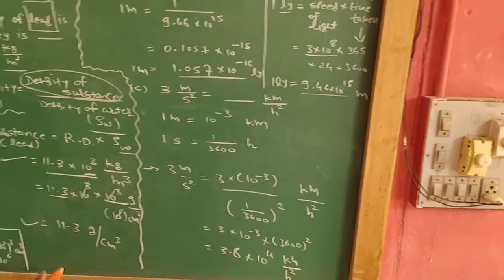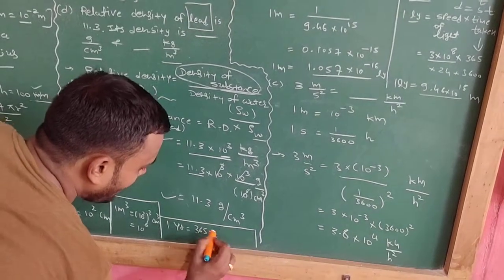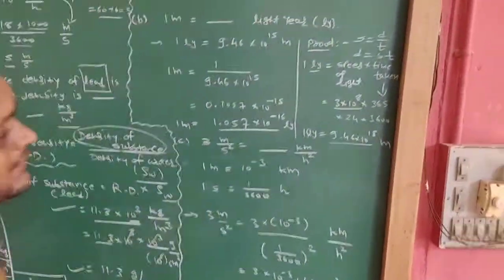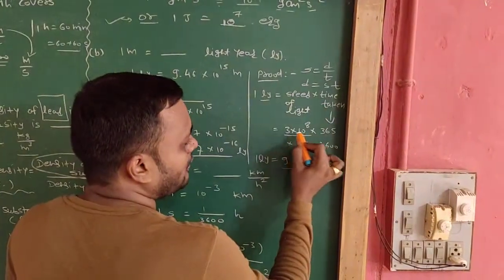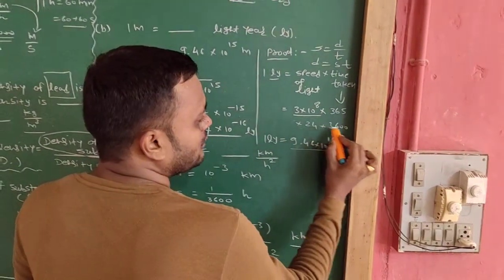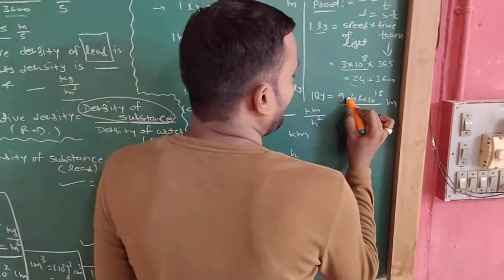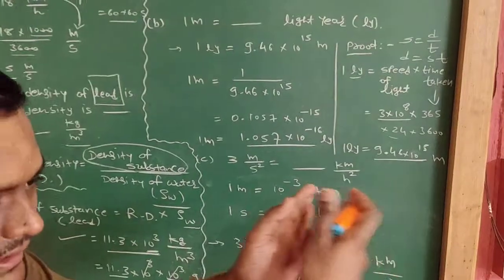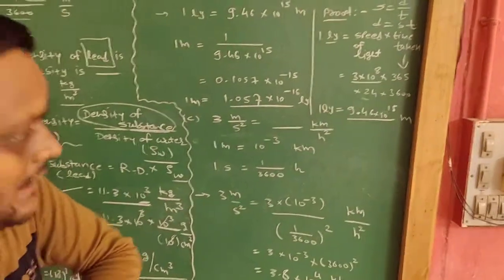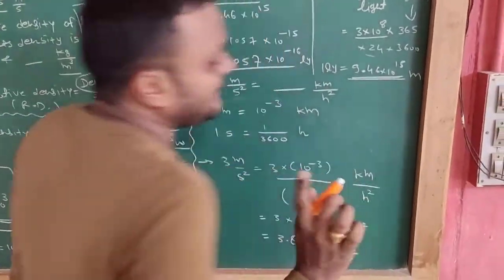You should know the year conversion: 1 year = 365 days; 1 day = 24 hours; 1 hour = 3600 seconds. Putting these values: speed of light is 3 into 10 raise to 8, time = 365 into 24 into 3600 seconds. Finding the product of all these terms gives you the value of one light year in meters. Remember the rule: when point shifts towards left, power is positive; towards right, power is negative.